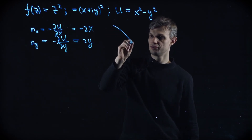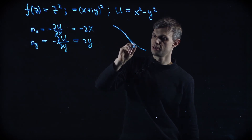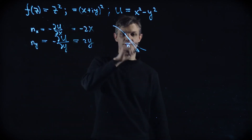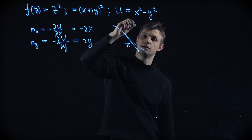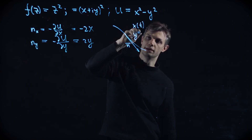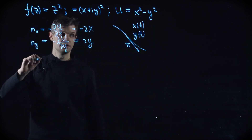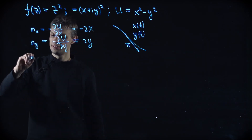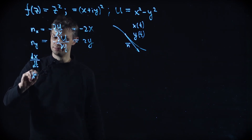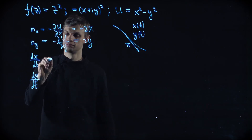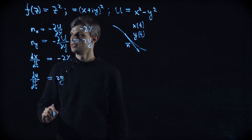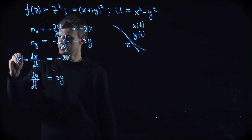The steepest descent direction equations give: minus du/dx equals minus 2x, and minus du/dy equals 2y. So along a curve parameterized by t, with x(t) and y(t), the tangent vector satisfies x-dot equals minus 2x and y-dot equals 2y.